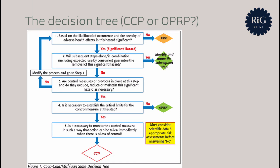This decision tree is available as a supplementary resource and can also be found online. Any other approach can be used to categorize a control measure as a CCP or OPRP — the decision tree is just one option. To recap the end objective: significant food safety hazards shall be addressed with control measures — either CCPs or OPRPs — and those control measures shall be effective. This is the main idea.